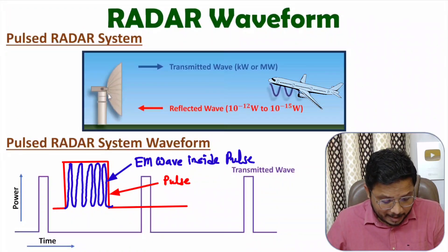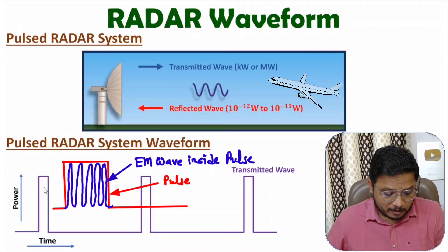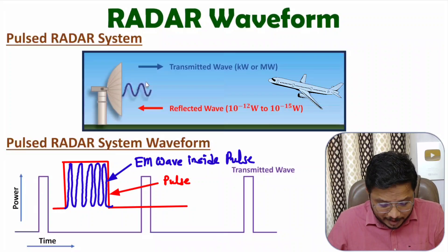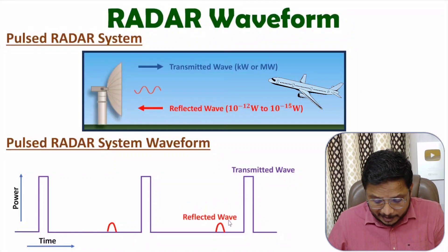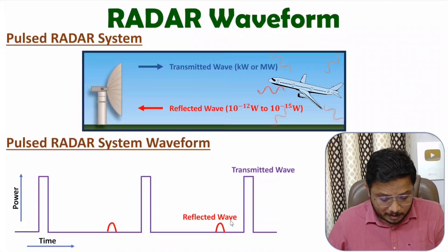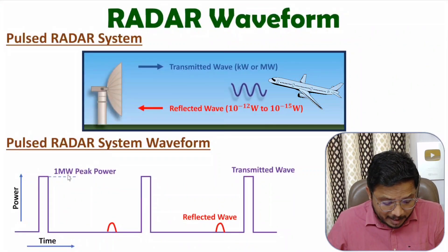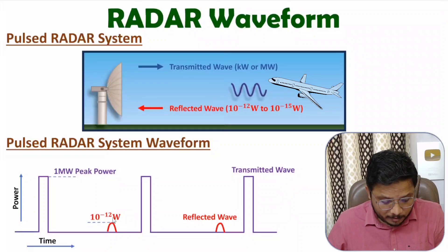That signal will have a frequency in terms of gigahertz, and the width of this pulse will be in terms of microseconds. During this pulse, we transmit the EM wave, and here by red color you can observe the reflected wave — the echo signal. The power of the transmitted signal is considered as 1 megawatt peak power, while the reflected wave has a peak power of 10 to the power minus 12 watts.